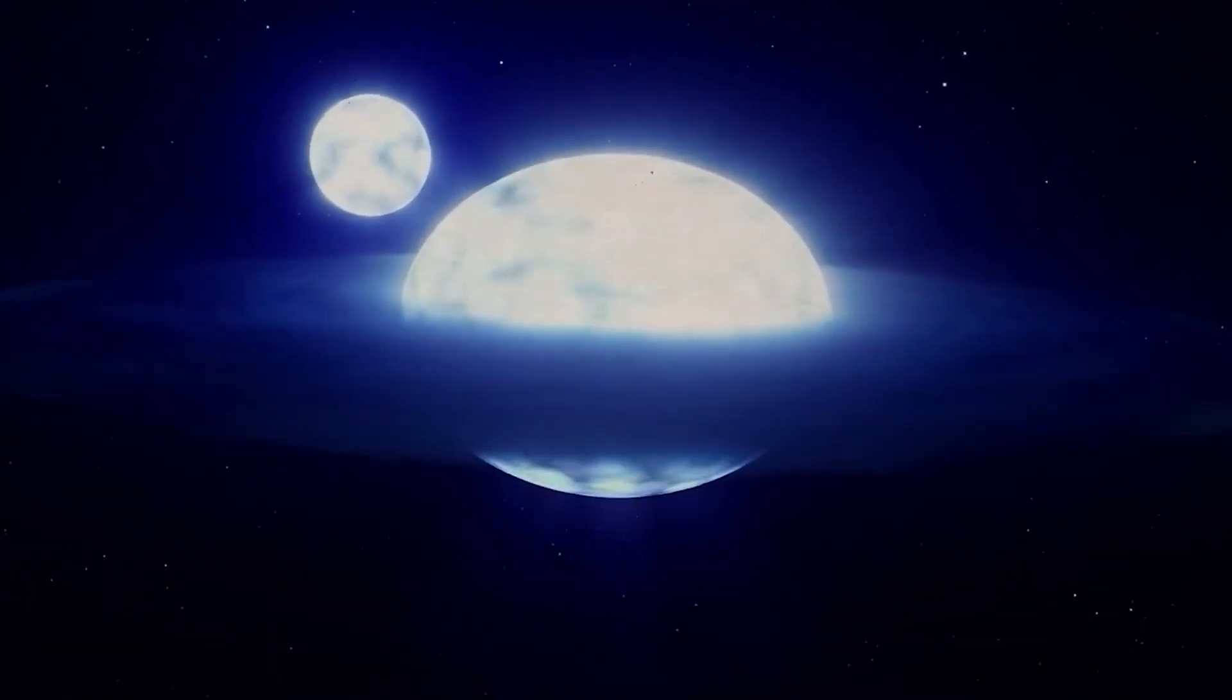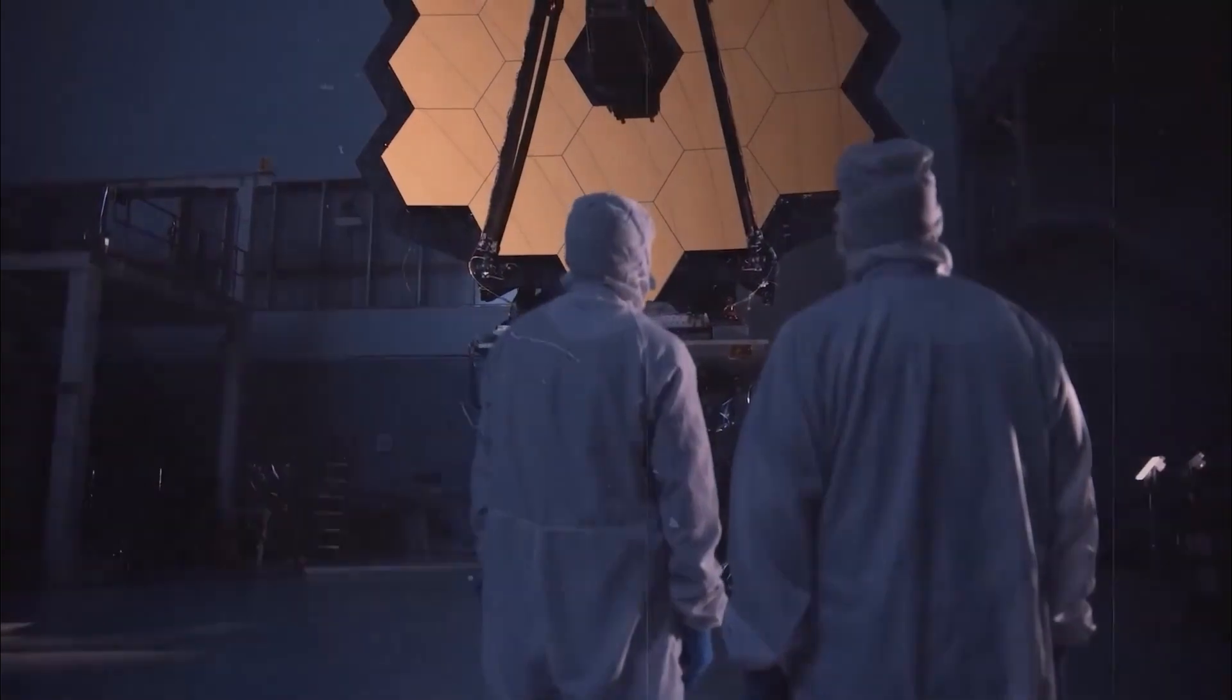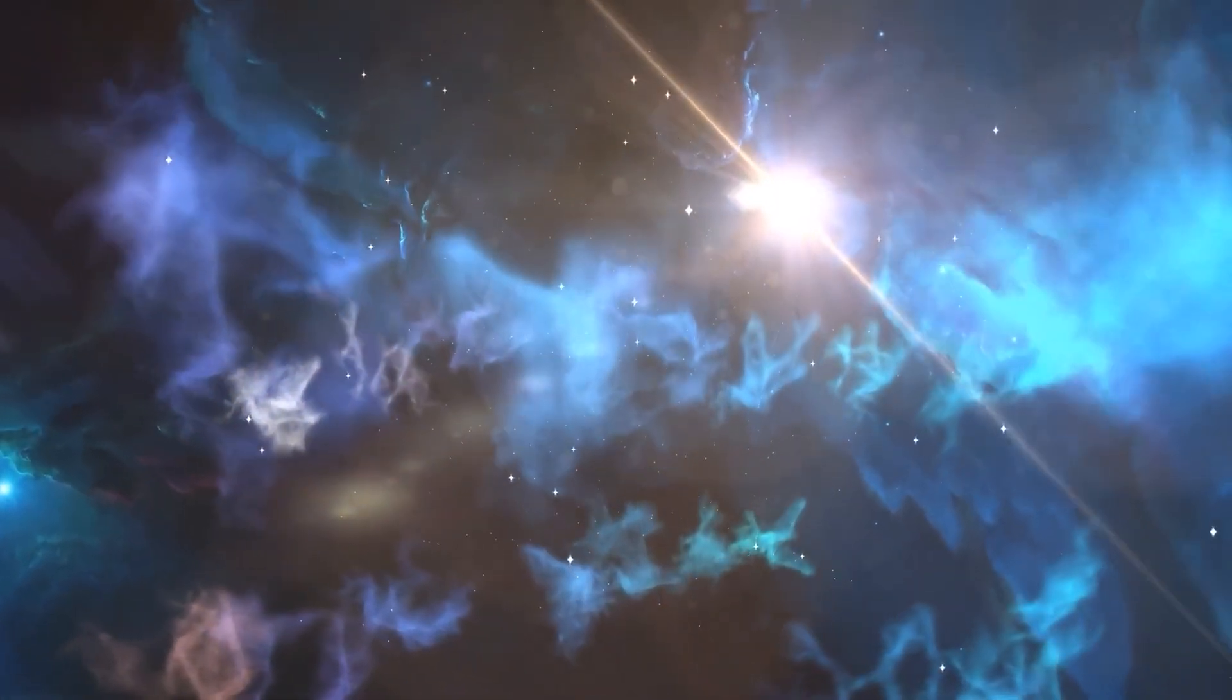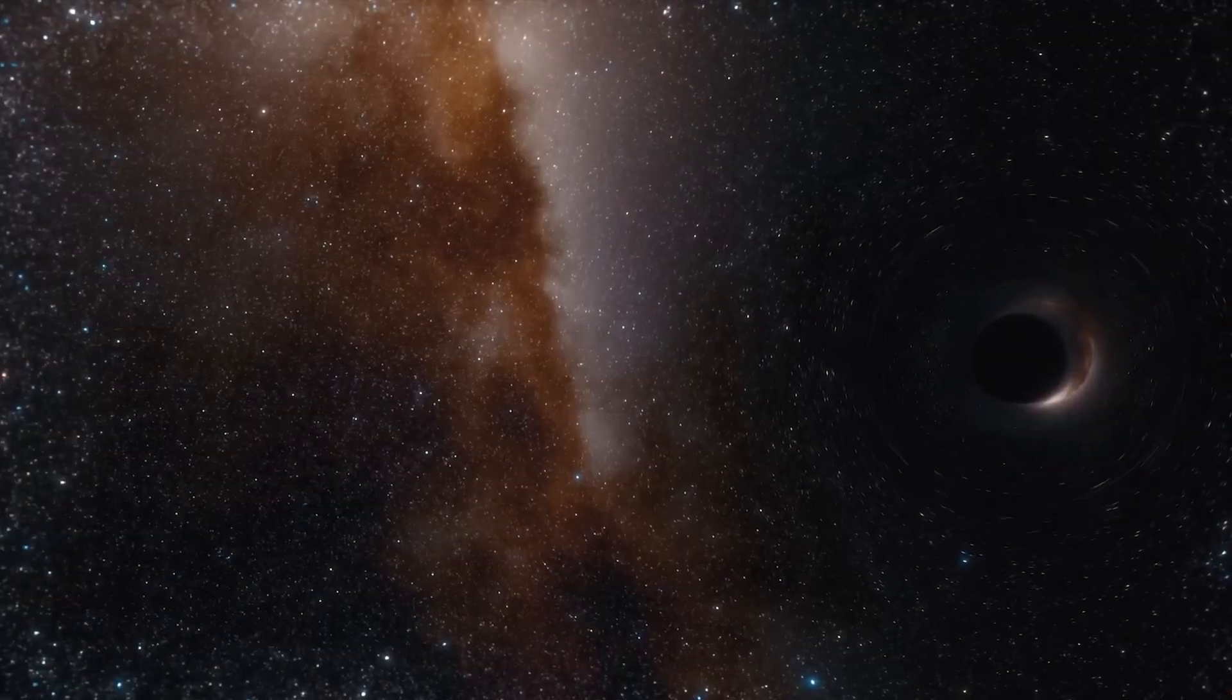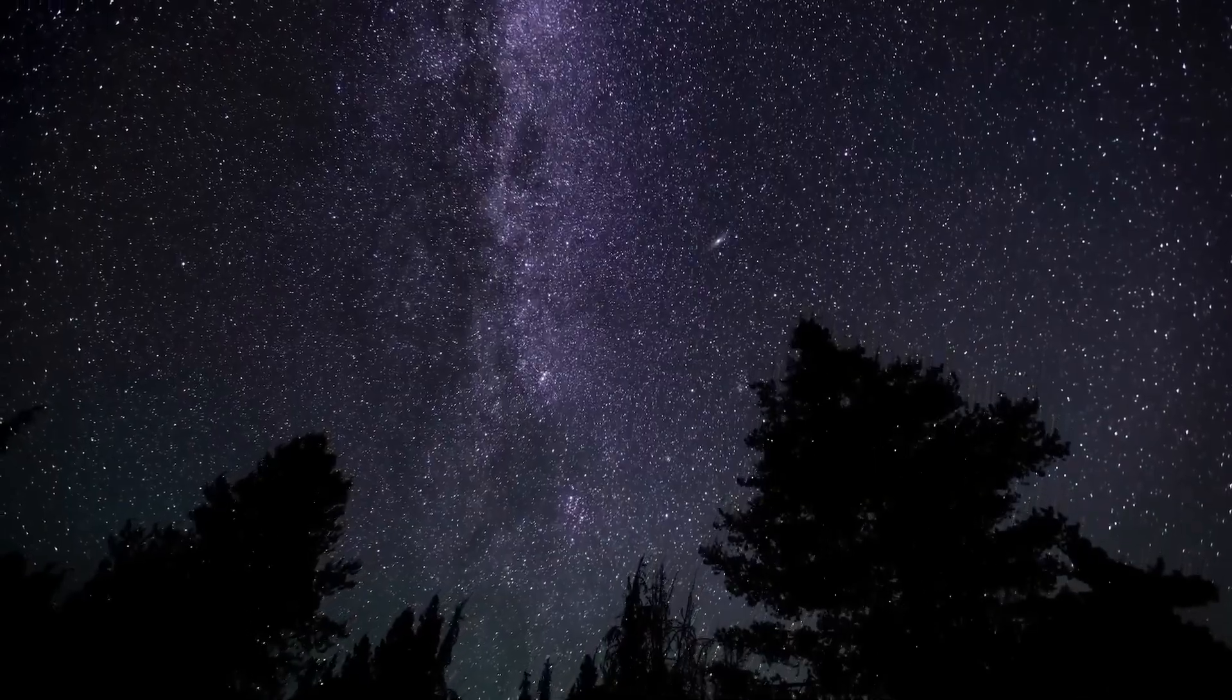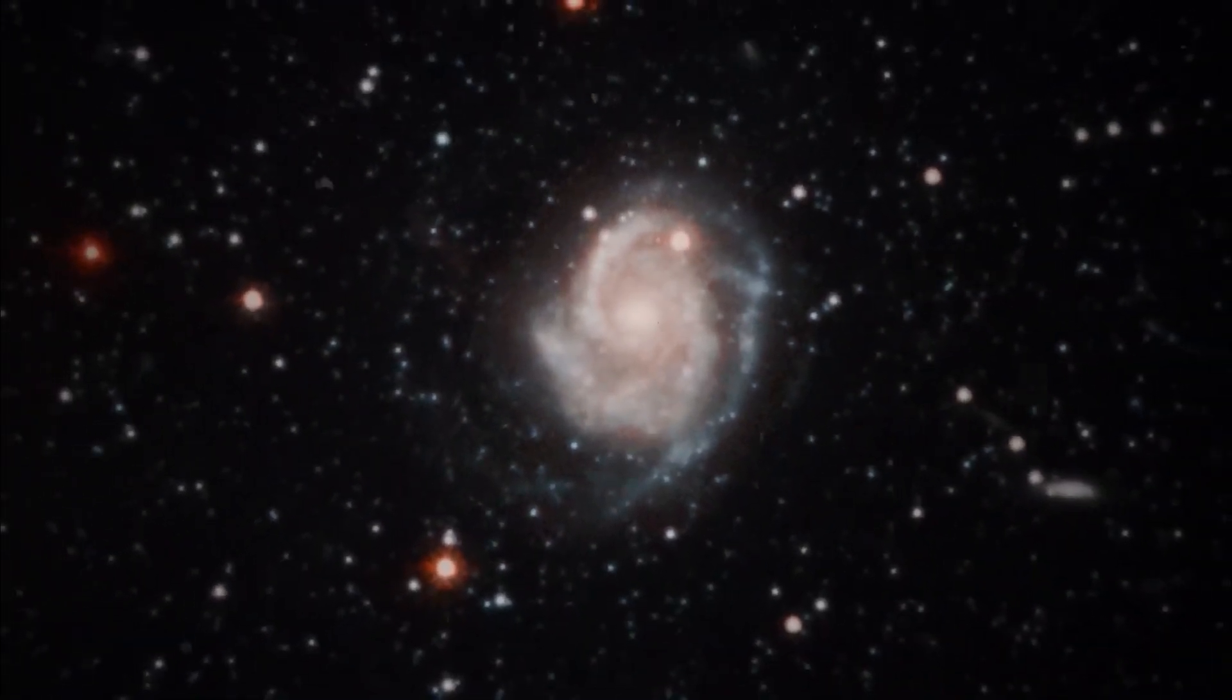Gravitational lensing was first predicted by Albert Einstein in 1912. Since then, it has become a valuable tool for astronomers, allowing them to study distant galaxies accurately. Gravitational lensing magnifies the light of these distant galaxies, making them appear bigger and brighter. As a result, they become more visible to the telescope.